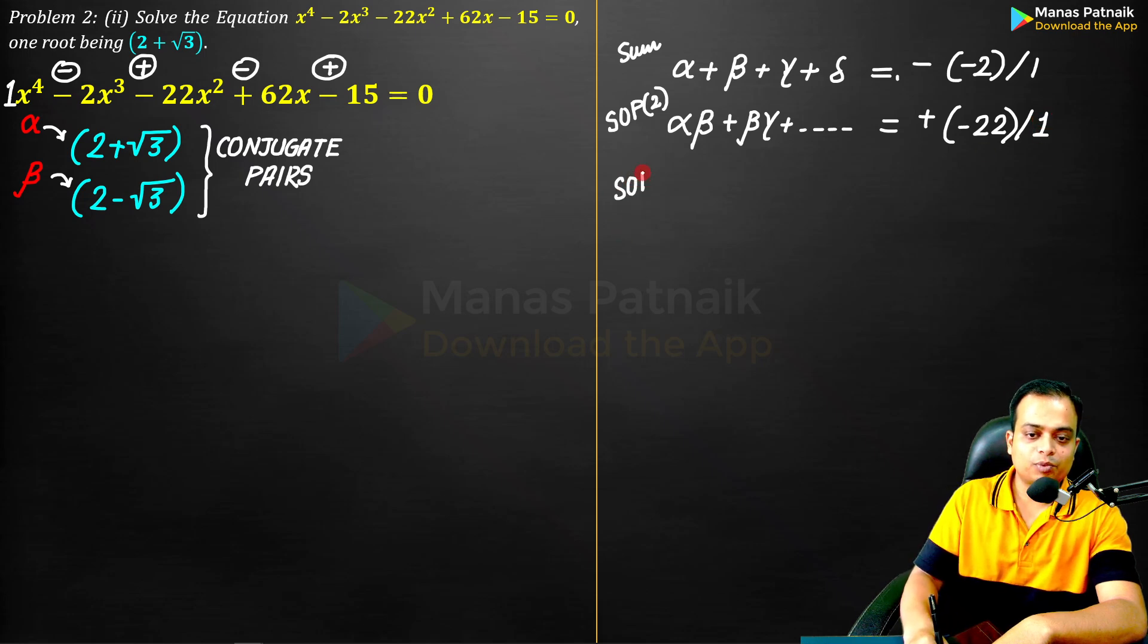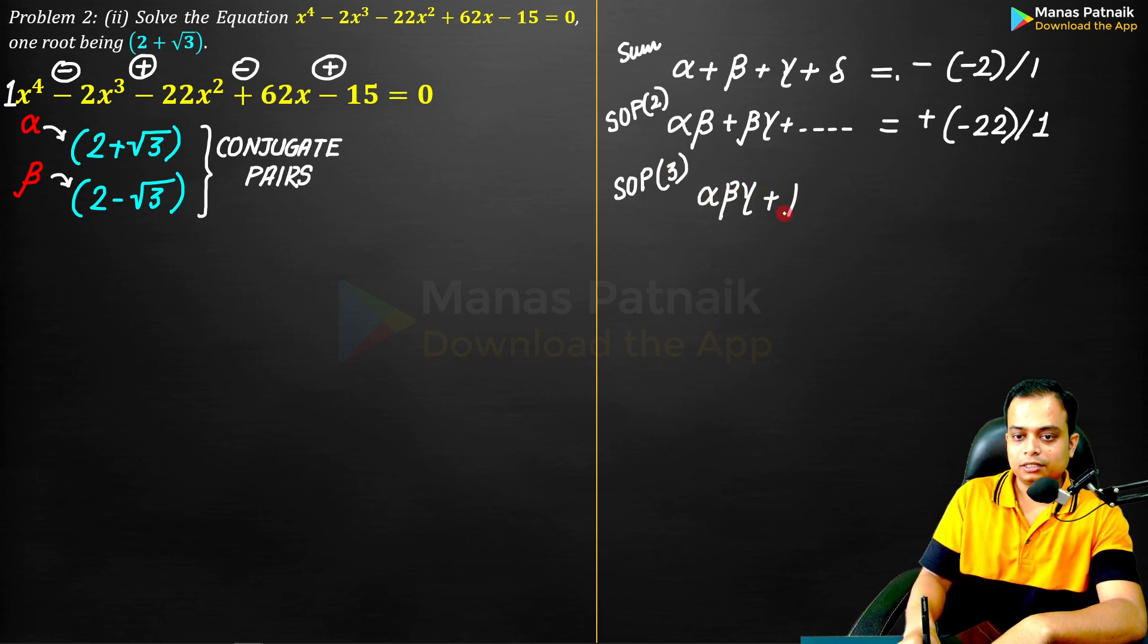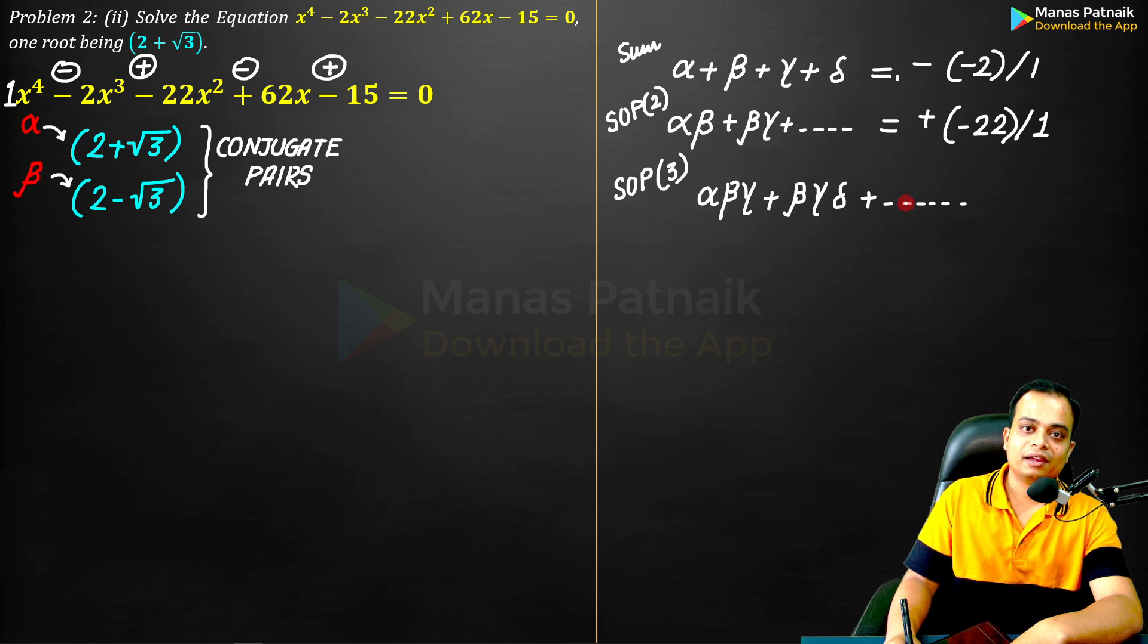Now again, you can apply sum of product taking three roots at a time. You can go for αβγ + βγδ followed by γδα followed by δαβ. You can do that.